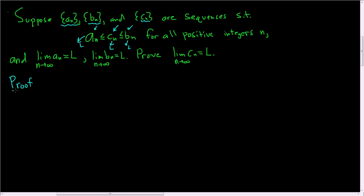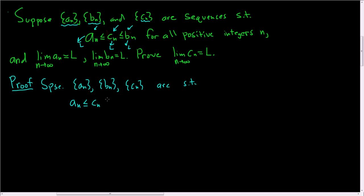Proof. We'll start by writing down our hypothesis, which is basically all of this stuff up here. So suppose we have three sequences a_n, b_n, and c_n, such that c_n is trapped in the middle: a_n ≤ c_n ≤ b_n for all positive integers n. And by the way, you can relax this condition — as long as this inequality is true for all little n greater than some capital N, everything's okay. In other words, as long as this is true from some point on, the squeeze theorem still works.